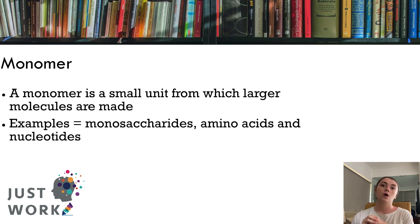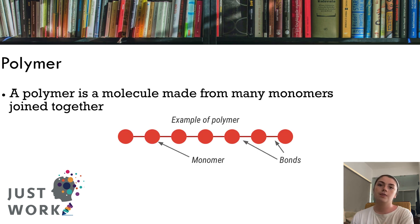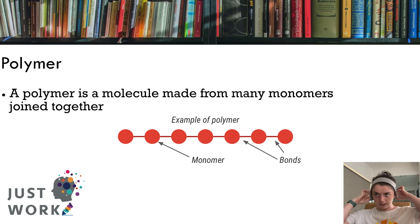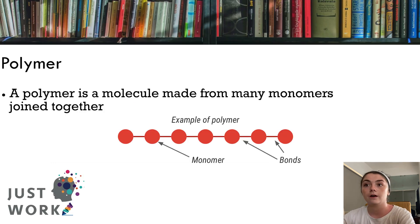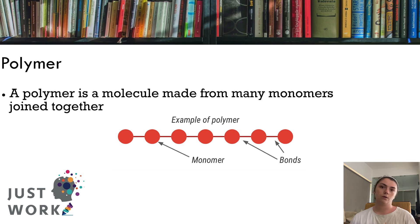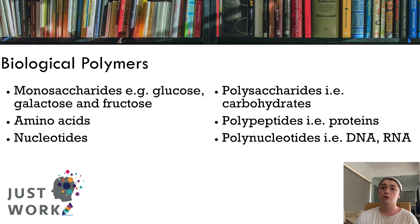The takeaway is that a monomer is the building block — the small molecule which, when joined together, makes a larger molecule. A polymer is a molecule made up from many monomers joined together. The picture on this slide does a really good job of explaining what both a monomer and a polymer are, and how joining monomers together using chemical bonds forms a polymer.